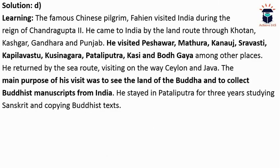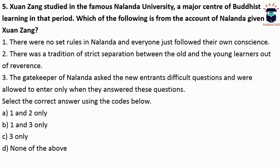Fa-Hien visited Peshawar, Mathura, Kanauj, Saraswati, Kapilavastu, Kushinagar, Pataliputra, Kashi, and Bodh Gaya. He visited during the reign of Chandragupta II. He stayed in Pataliputra for 3 years, studying Sanskrit and copying Buddhist texts, as his main purpose was to visit the birthplace of the Buddha and to collect important texts written about Buddhism.